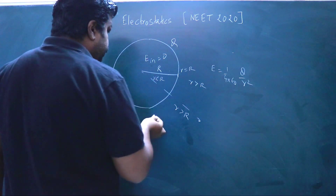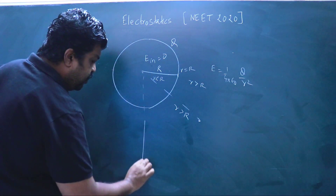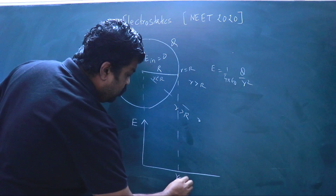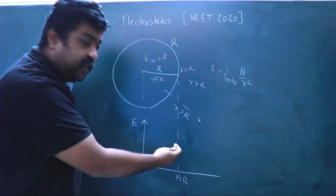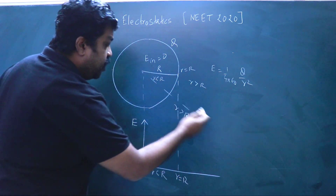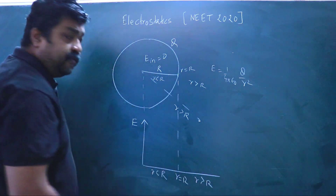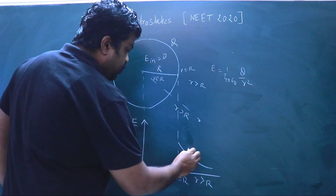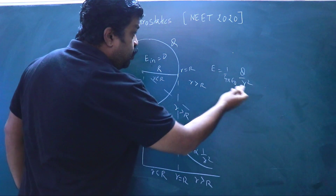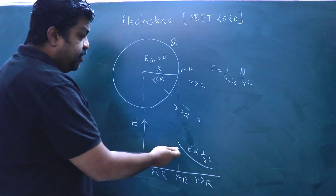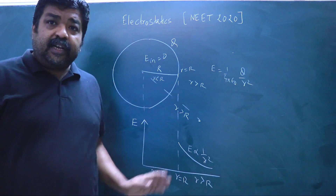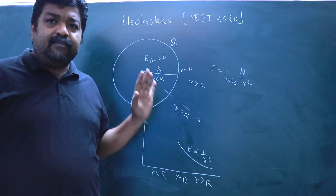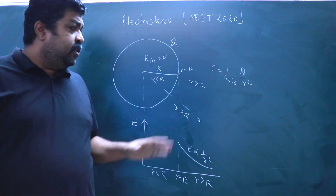If we draw the variation of electric field with distance: on the x-axis we have r, with r equal to R marking the surface. For r less than R (inside), the electric field intensity is zero. For r greater than R (outside), the electric field intensity decreases — E is inversely proportional to r squared outside. Inside, the electric field intensity is zero.